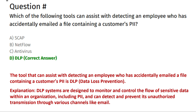The correct answer is option D, DLP. DLP (Data Loss Prevention) systems are designed to monitor and control the flow of sensitive data within an organization, including PII, and can detect and prevent its unauthorized transmission through channels like email.